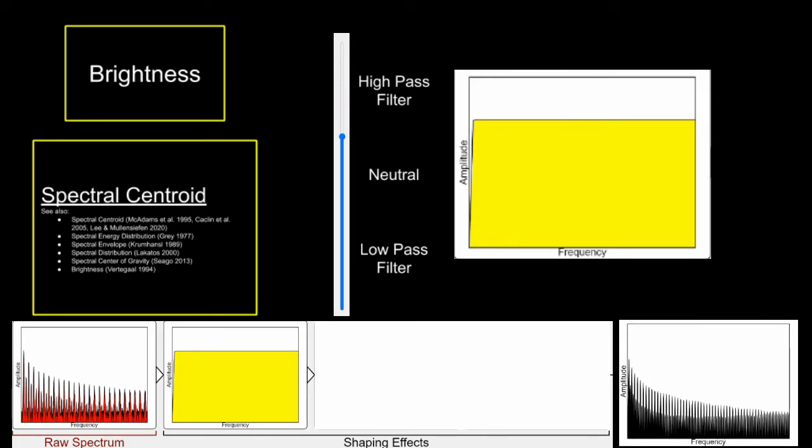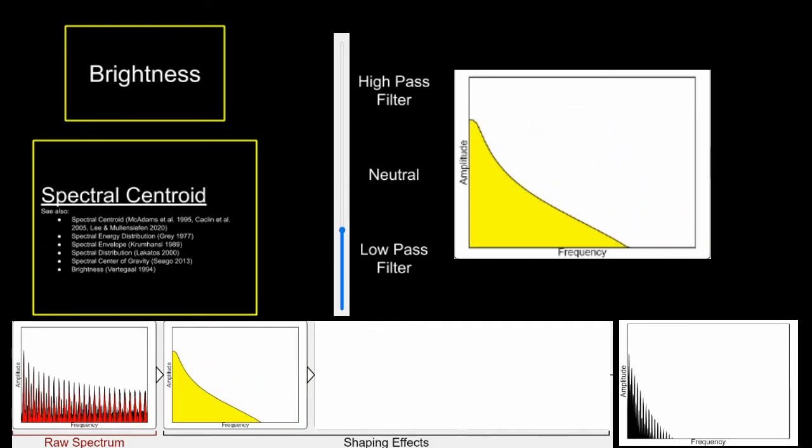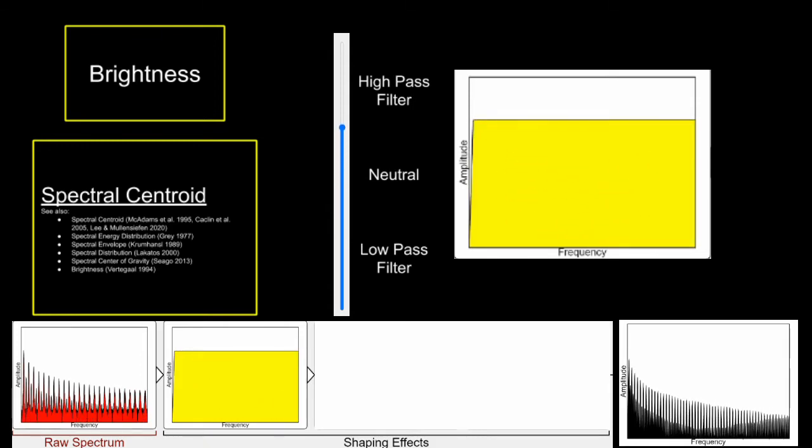In technical terms, what filters do is apply a modifier for different frequencies, leaving some frequencies unchanged, some frequencies quieter, and sometimes making some frequencies louder.